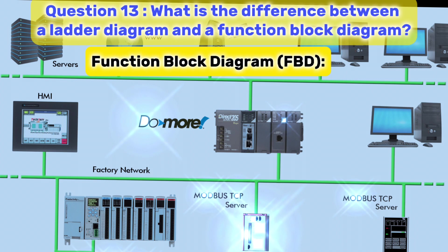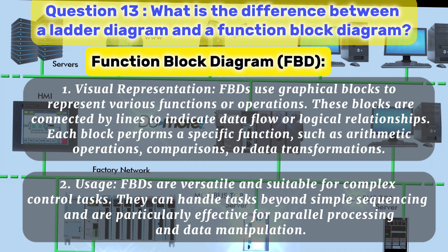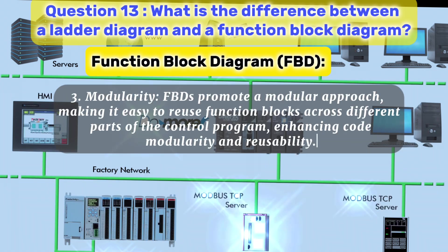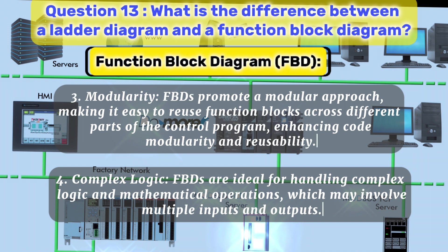Function block diagram, FBD. 1. Visual representation: FBDs use graphical blocks to represent various functions or operations. These blocks are connected by lines to indicate data flow or logical relationships. Each block performs a specific function, such as arithmetic operations, comparisons, or data transformations. 2. Usage: FBDs are versatile and suitable for complex control tasks. They can handle tasks beyond simple sequencing and are particularly effective for parallel processing and data manipulation. 3. Modularity: FBDs promote a modular approach, making it easy to reuse function blocks across different parts of the control program, enhancing code modularity and reusability. 4. Complex logic: FBDs are ideal for handling complex logic and mathematical operations, which may involve multiple inputs and outputs.